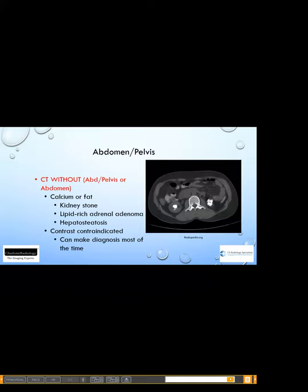We can actually make most diagnoses in the abdomen and pelvis on CT without contrast if the patient can't get contrast — we can see most inflammation. However, it is difficult to differentiate different soft tissues without contrast. We also use non-contrast CT to look for calcium — kidney stones, gallstones, atherosclerosis — and for fat, such as diagnosing lipid-rich adrenal adenomas or hepatosteatosis. Those findings are best seen on non-contrast CT.